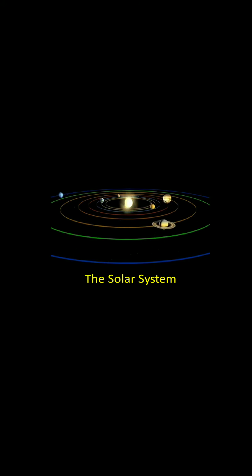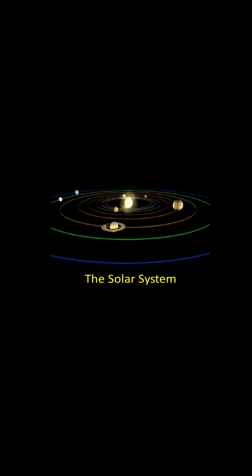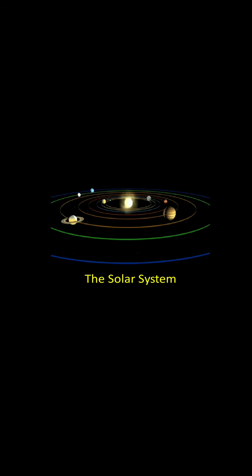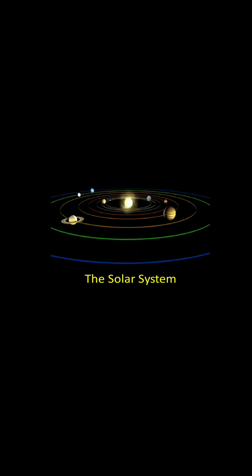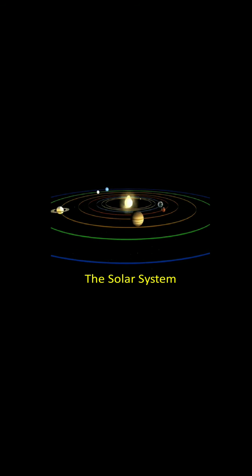Good morning, dear students. Today I am going to teach you the solar system. You can see the diagram of the solar system here. The solar system consists of the Sun and eight planets. In increasing order of distance from the Sun, they are: Mercury, Venus, Earth, Mars, Jupiter, Saturn, Uranus, and Neptune. They all revolve around the Sun in a definite orbit, as you can see in the diagram.